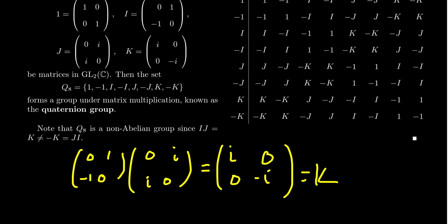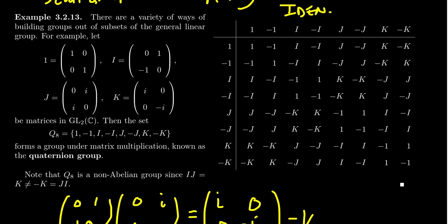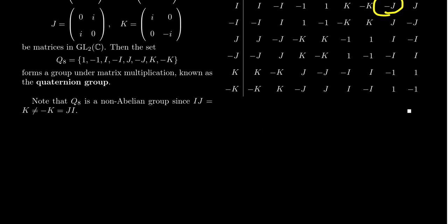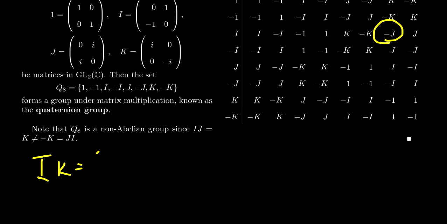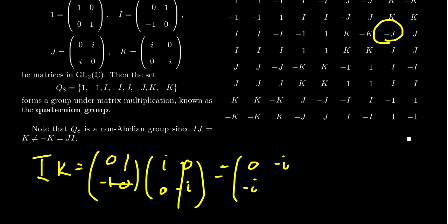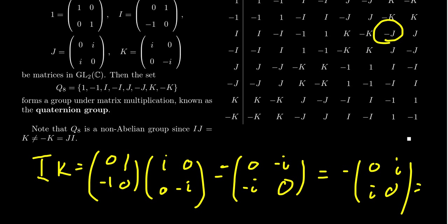So I times J equals K. And I times negative J is negative K — not too surprising. I claim I times K is negative J. Let's verify: I = [0, 1; -1, 0] times K = [i, 0; 0, -i]. The product gives [0, -i; -i, 0]. Factoring out negative 1, this gives negative [0, i; i, 0], which is in fact negative J. That agrees with the Cayley table. And then I times negative K gives J.